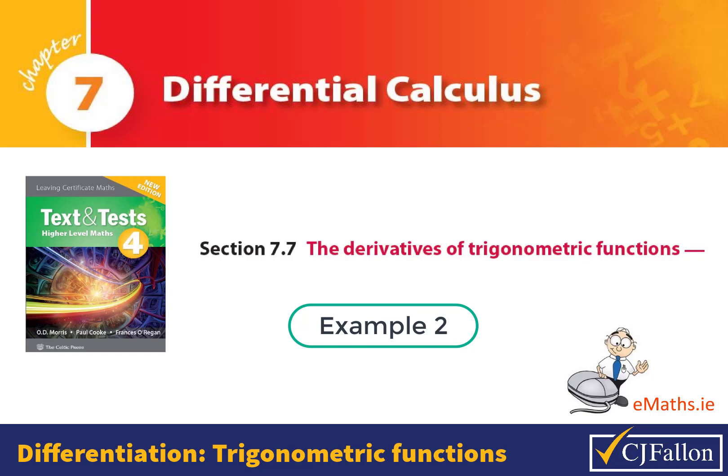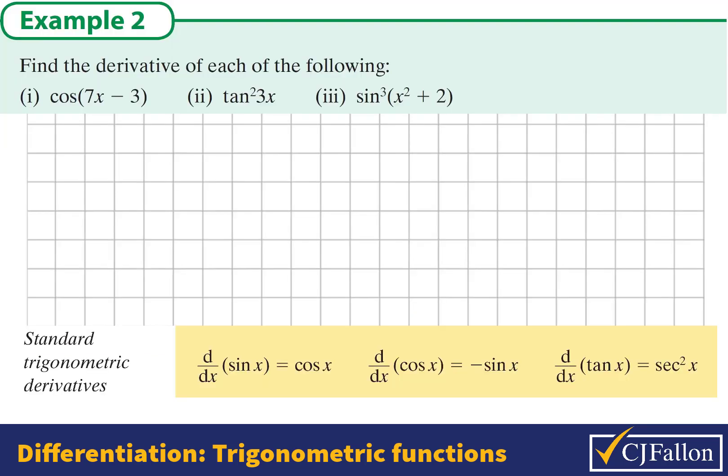Differentiation of trigonometric functions with the chain rule. Find the derivative of cosine of the angle 7x minus 3.